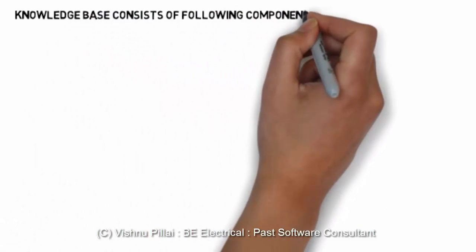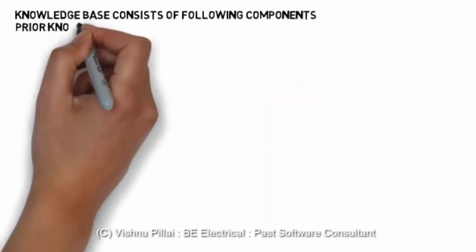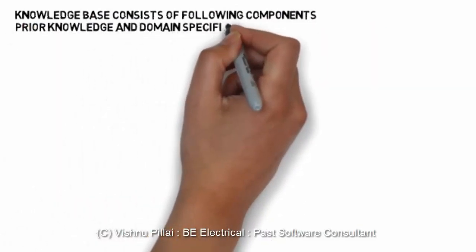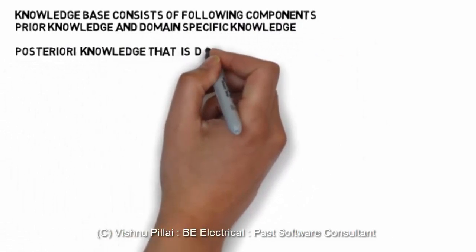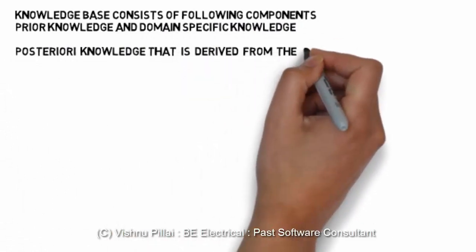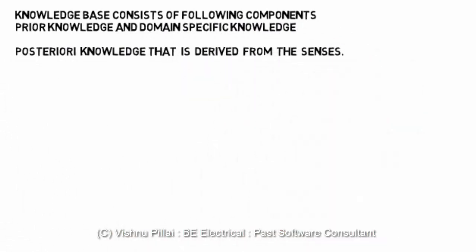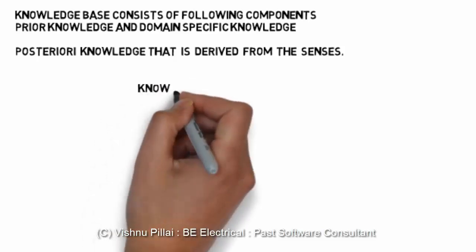What does a knowledge base consist of? The knowledge base consists of the following components: prior knowledge and domain-specific knowledge. It also includes knowledge derived from the senses, known as a posteriori knowledge. These are the two components which make up the knowledge base.